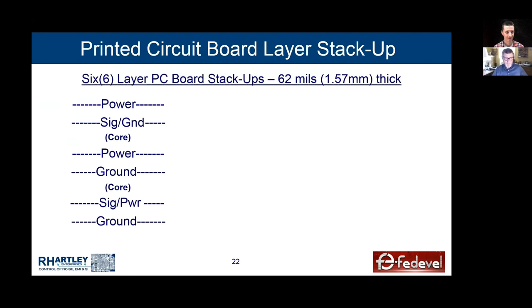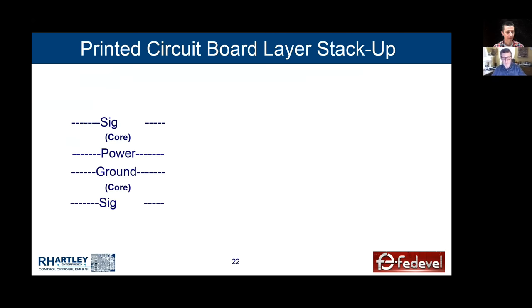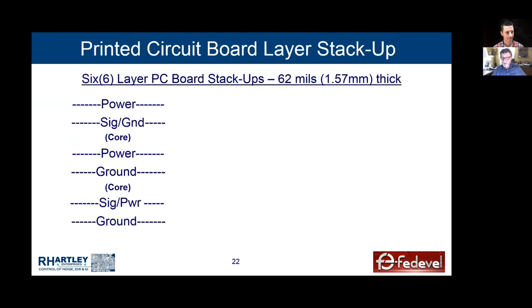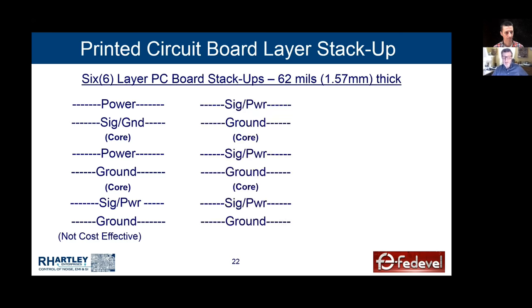I got a call from a guy in Montreal: four-layer board with power and ground in the middle, EMI problem, management willing to go to six layers. I said I would do it in six layers like Lee's approach — still with two signal layers — and it completely got rid of the EMI problem, because power was delivered through five different dielectrics. However, this isn't cost-effective because there are only two signal layers.